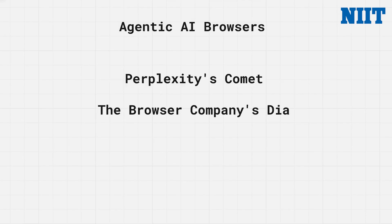We've just seen this cutting-edge technology from Perplexity Comet, but that's not the only one. There is Dia by The Browser Company — the same team behind the Arc browser — Opera's Neon powered by its Aria assistant, and many more still under development. You also have AI integrations that already exist: Copilot inside Microsoft Edge, and the new AI mode in Google Chrome.